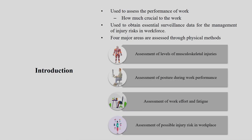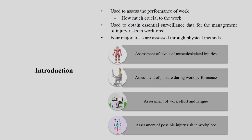Let us understand what physical methods are, what varieties of things are available in physical methods, and why we call them physical methods. If you look at the major definition of ergonomics, there are domains which include the physical domain and the cognitive domain. Whatever things are covered in physical ergonomics and when we try to measure and assess them through techniques and tools, we call them physical methods.